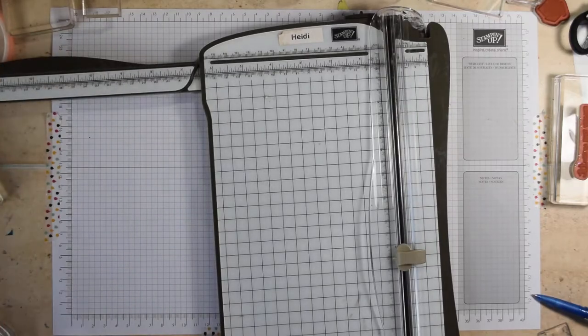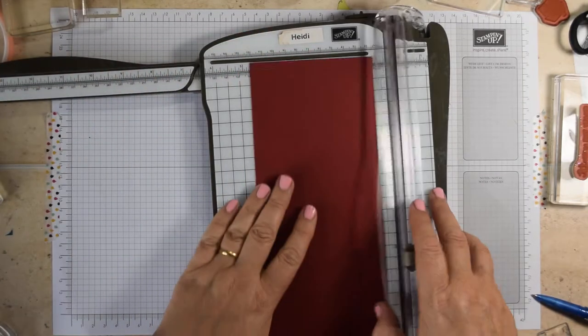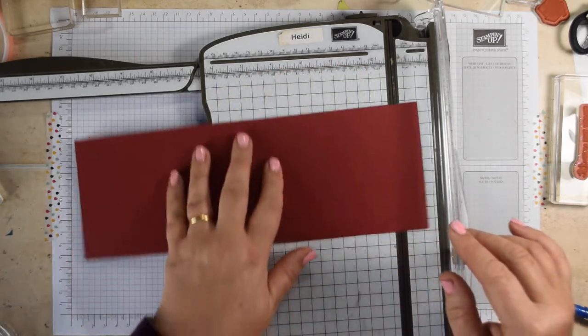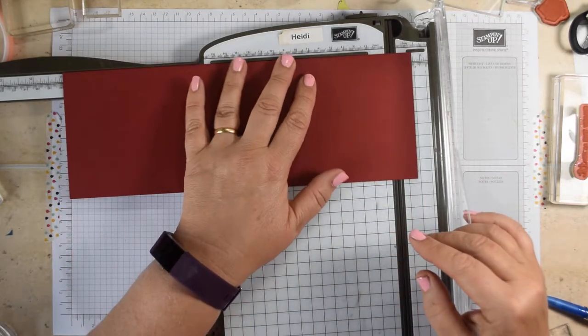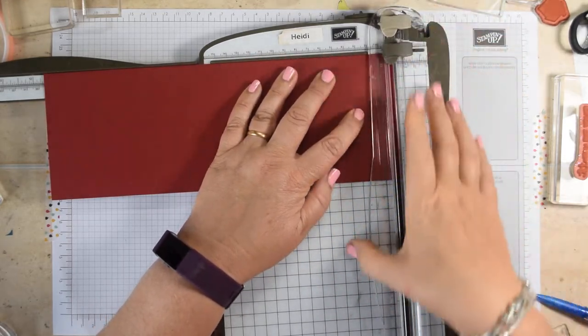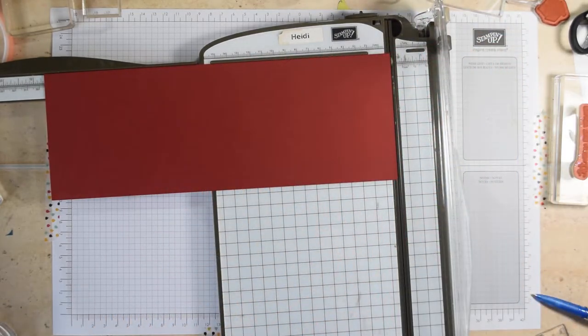So to start off with, you're going to need a piece of Cherry Cobbler cardstock and this is half of a UK A4, so that's 10.5 wide and you just trim it down very slightly to 29.5 long, so it's just taking a couple of millimeters off the end there.